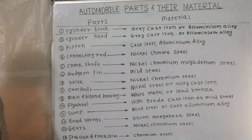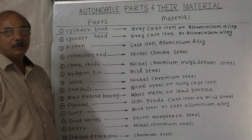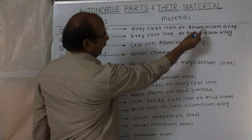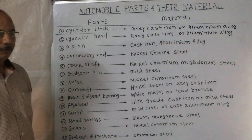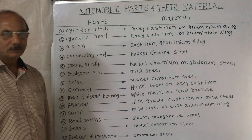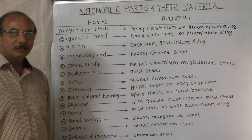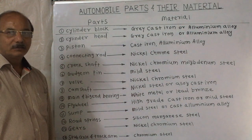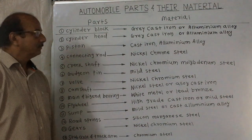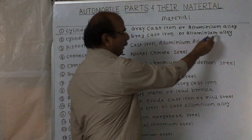First one is the cylinder block. Which materials are used for the cylinder block? Grey cast iron or aluminium alloy. Aluminium alloy is mostly used in two-wheelers or two-stroke engines. Grey cast iron or aluminium alloy.